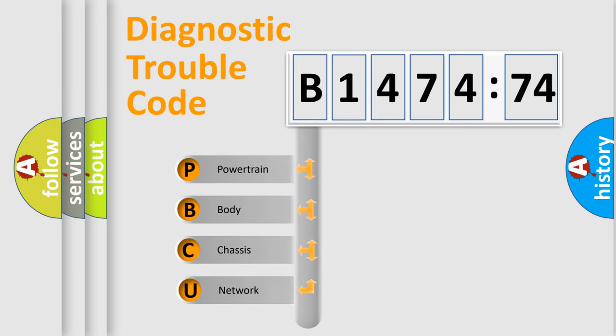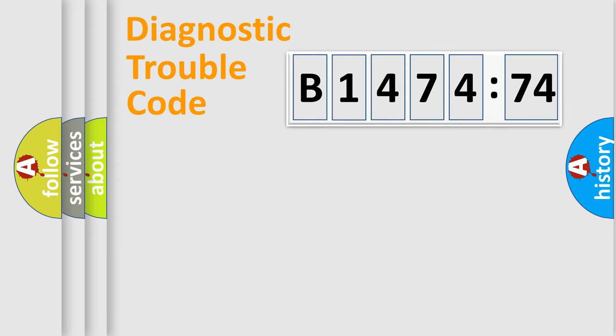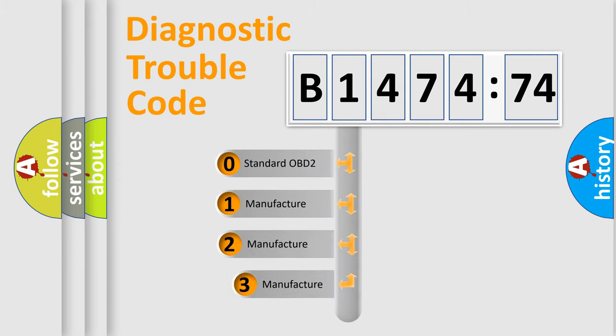First, let's look at the history of diagnostic fault code composition according to the OBD2 protocol, which is unified for all automakers since 2000. We divide the electric system of automobiles into four basic units: powertrain, body, chassis, and network.